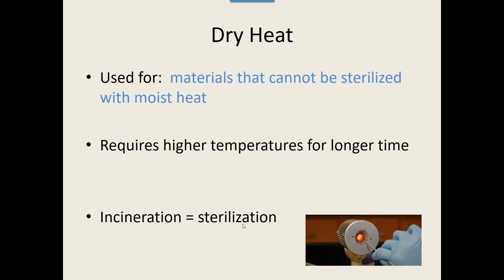Then there's dry heat. We use it on materials that cannot be sterilized with moist heat — for example, a powder you can't add water to, or a metal instrument that would rust and corrode. Since moist heat is more effective than dry heat, dry heat requires higher temperatures for longer periods of time to kill the same organisms.